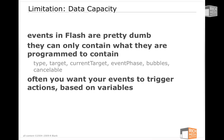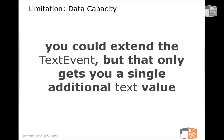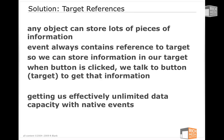Events in Flash are actually pretty dumb. There's very little that they could know, store, or do — they only contain what they are programmed to contain. This brings up an issue because a lot of times we want our events to trigger actions that depend on variables. Clicking one of eight different buttons doesn't load the same page; each button loads its own page. So we depend on variables — it's not just knowing that an event happened, but also knowing some variable piece of data associated with that event. We have the text event we can play with, but it only gets us a single piece of data. There are two potential solutions.